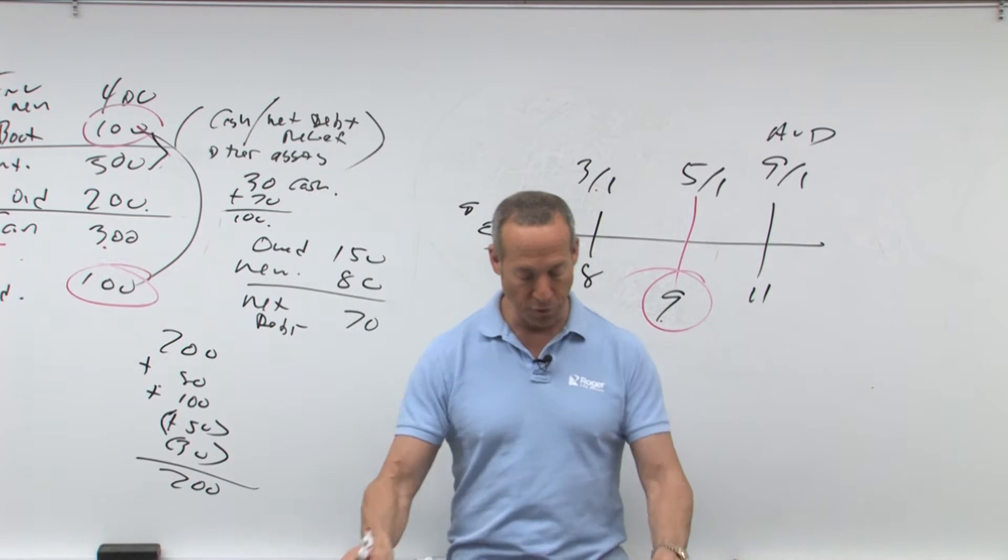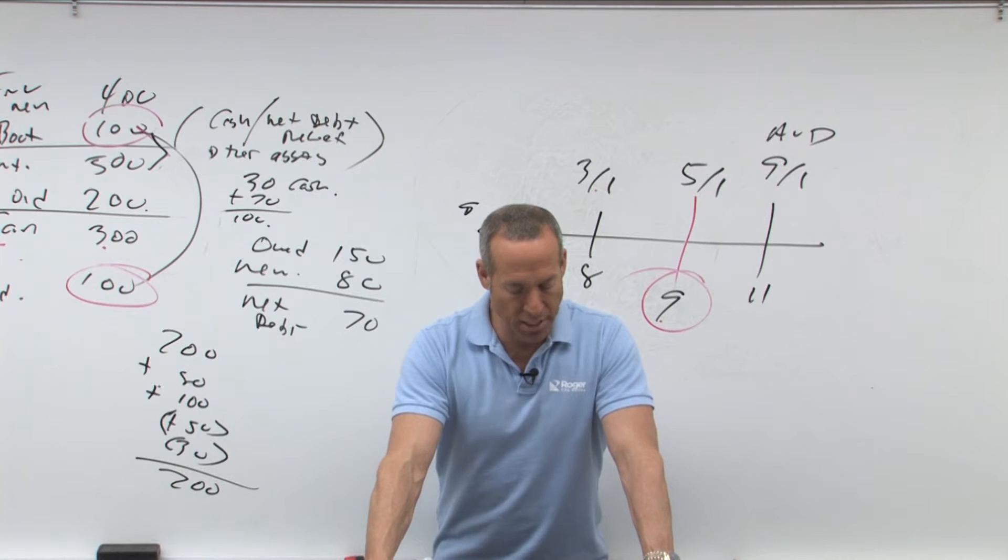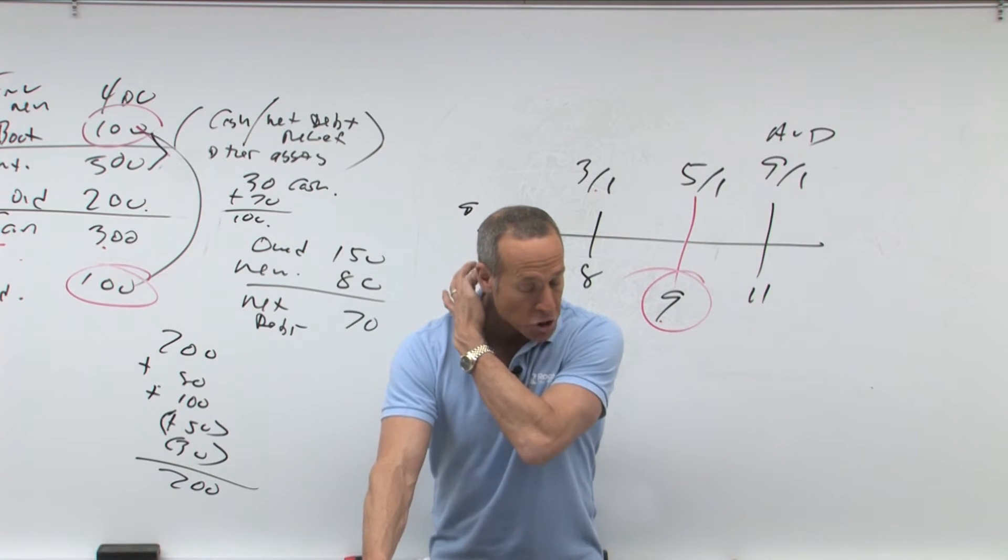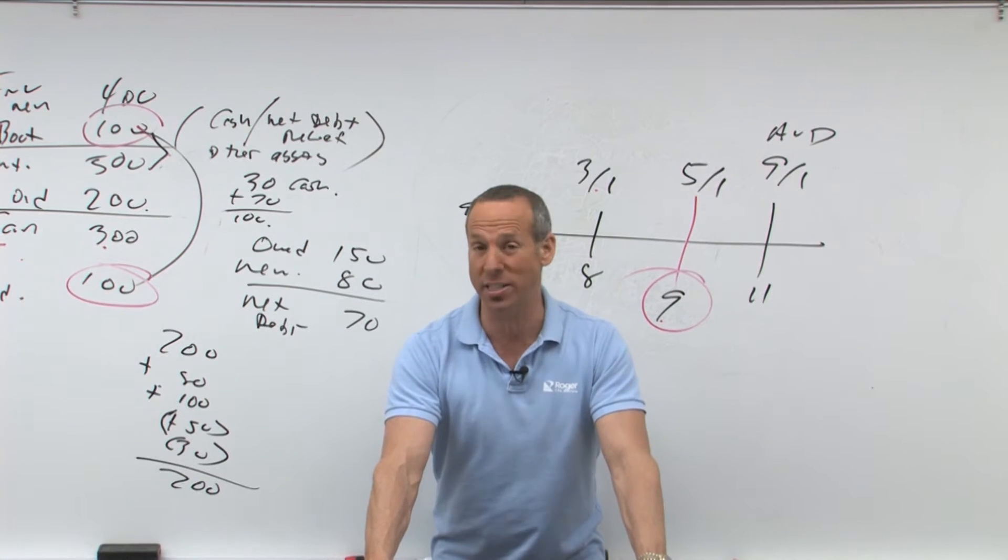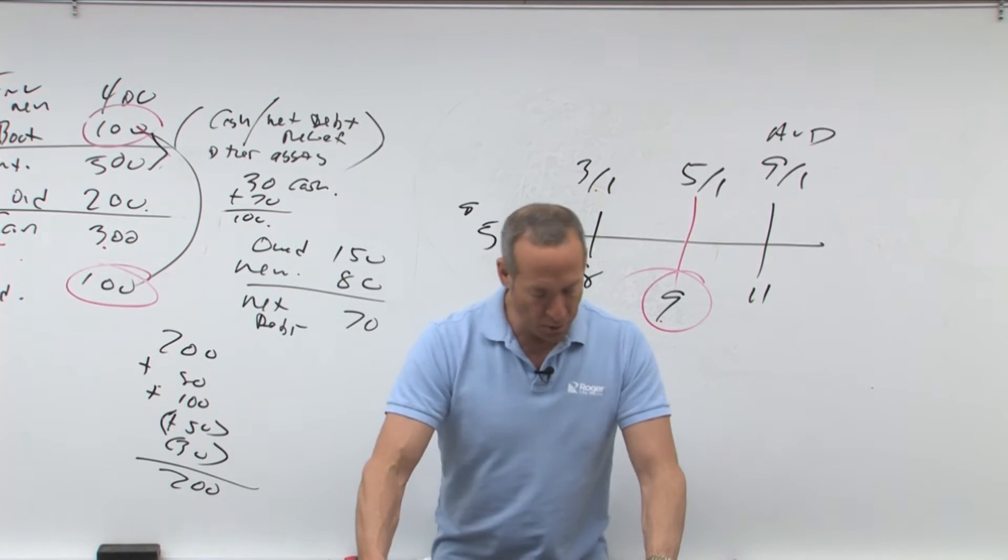All right, problems 10 and 11 are based on the following. Connor purchased 300 shares of Zinco stock for $30,000. On May 23rd, Connor sold all the stock to his daughter—is that a related party? Yes. For $20,000, the fair market value.